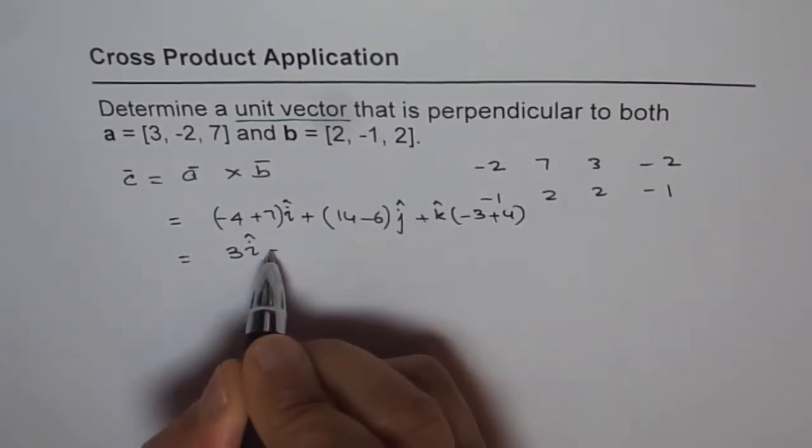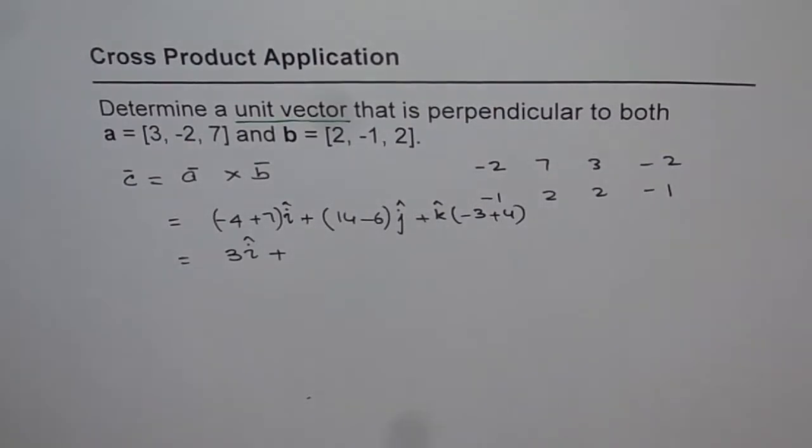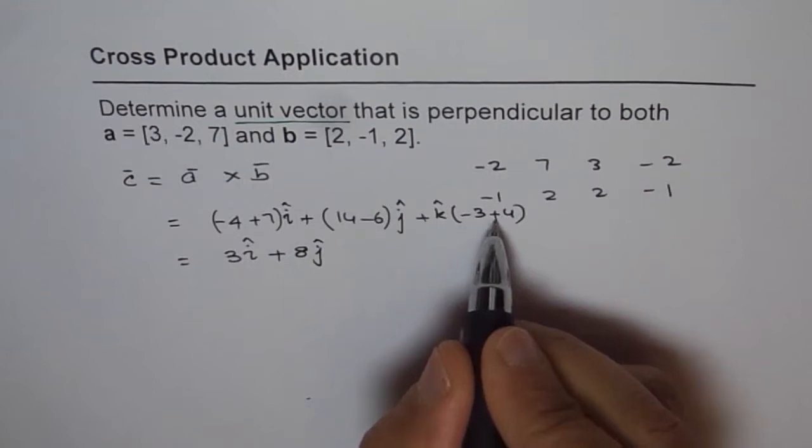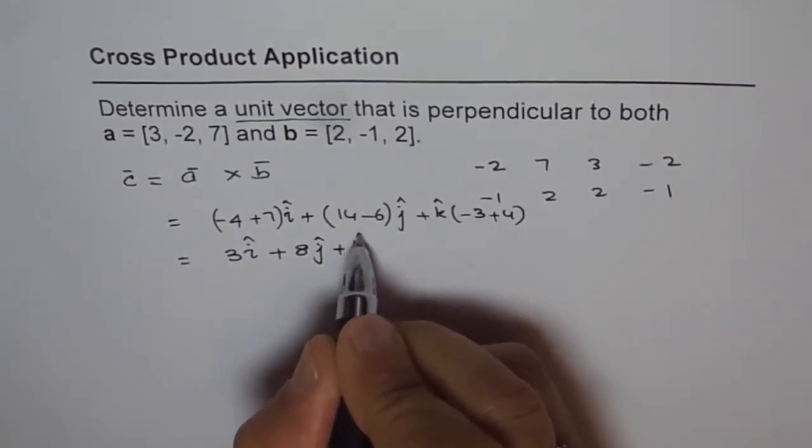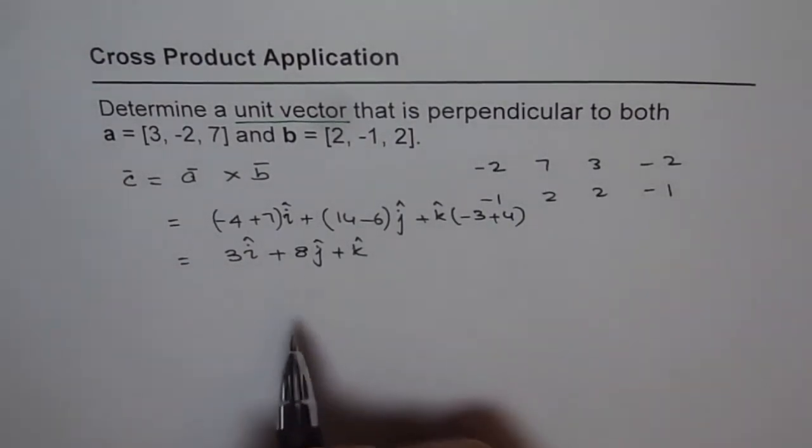And here we get 14 minus 6 is how much? It's 8. 8J. And then minus 3 plus 4 is 1, plus K. So that is what we get. So this is our vector C, and it's not a unit vector.